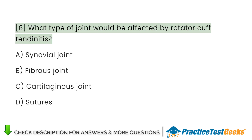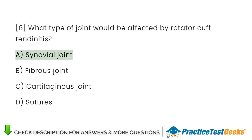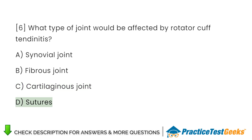What type of joint would be affected by rotator cuff tendinitis? A. Synovial joint. B. Fibrous joint. C. Cartilaginous joint. D. Sutures.